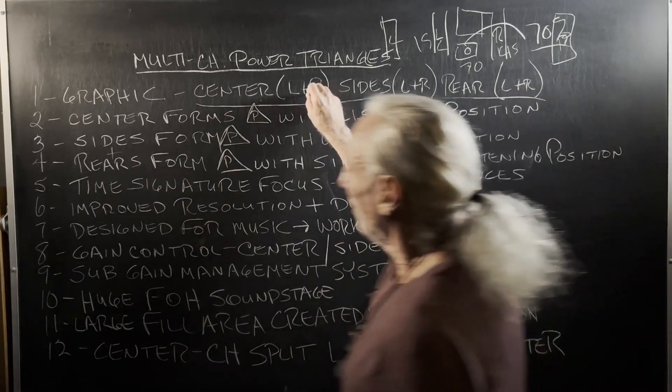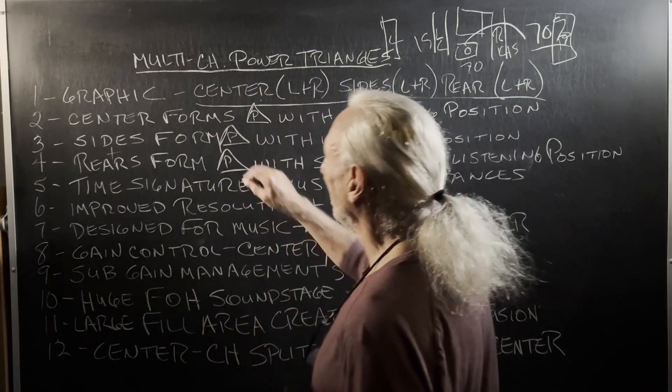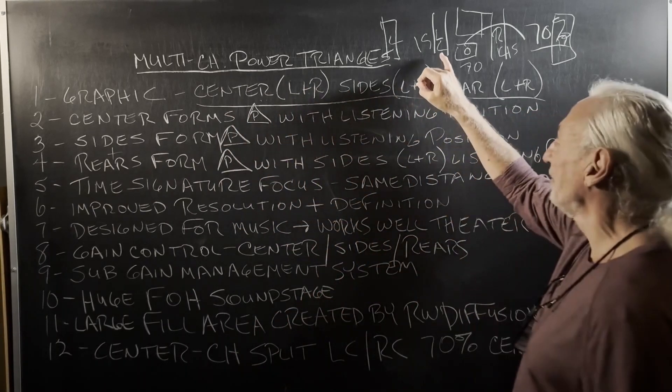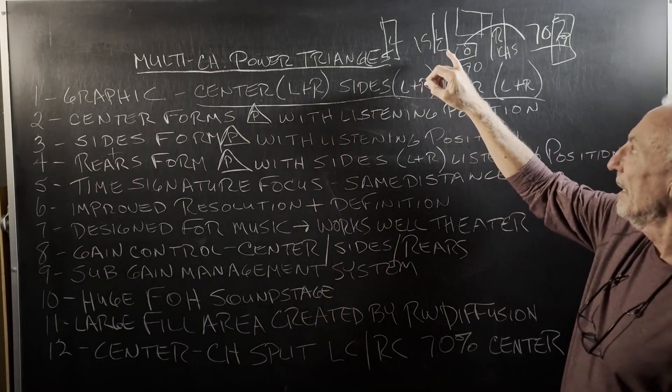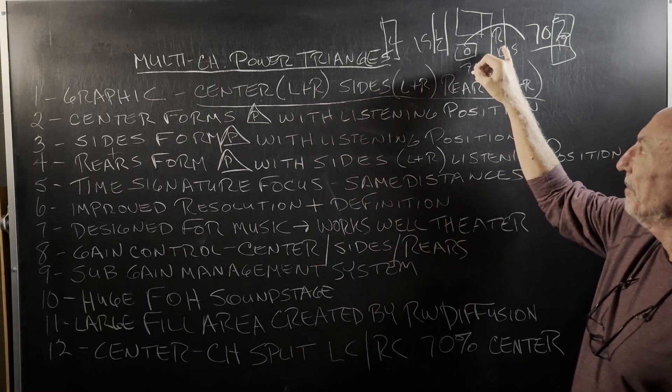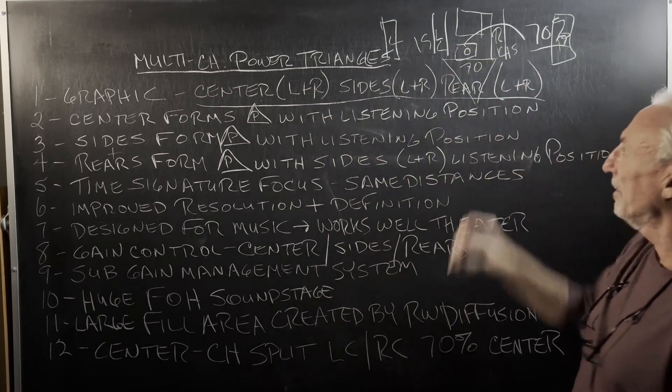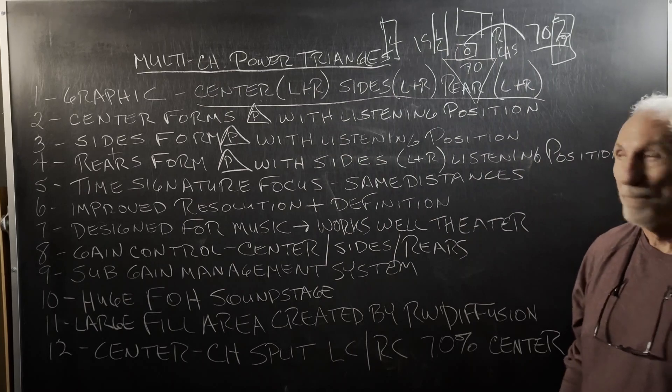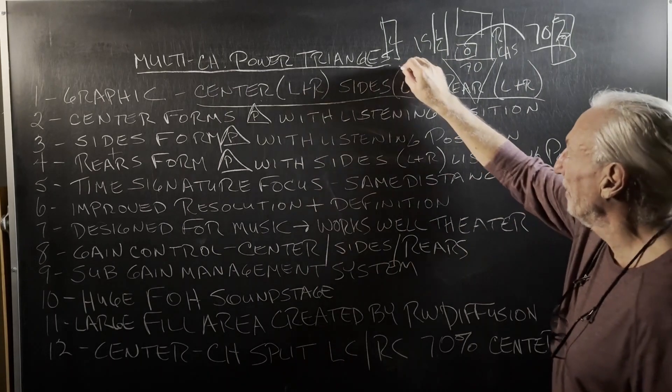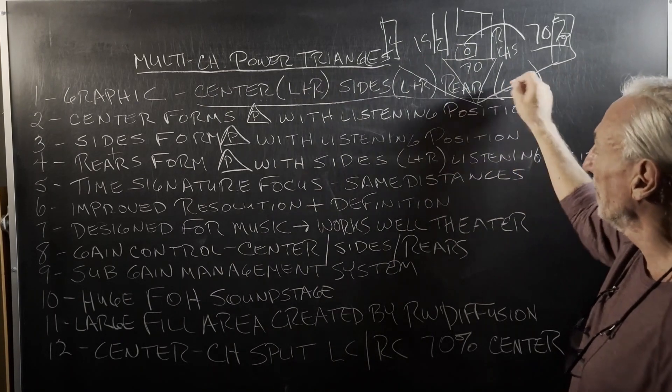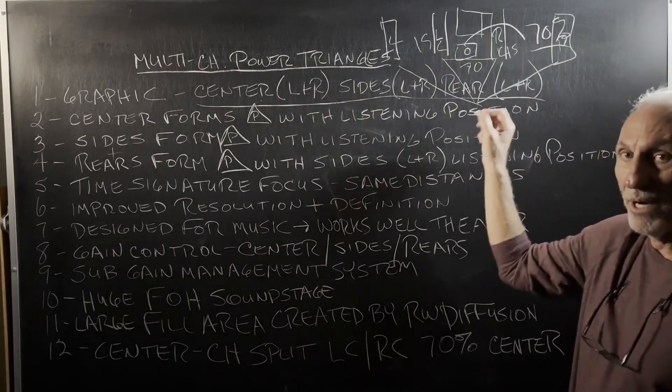So we went over the fact we split our center channel. Now, if you take the center channel and you form it with the left and the right to the listening position, you have a power triangle. If you take the left and right channel and put it at the listening position, you have another power triangle.